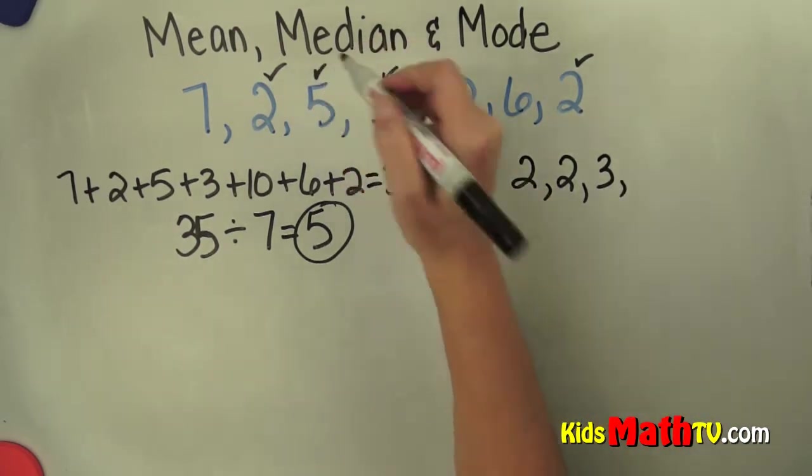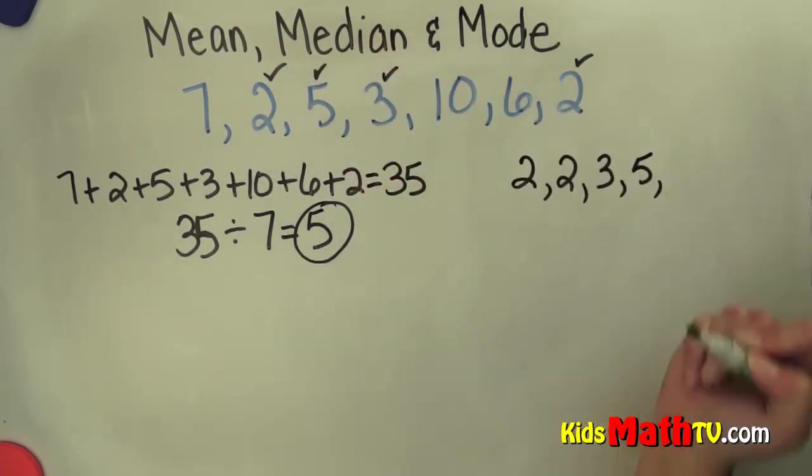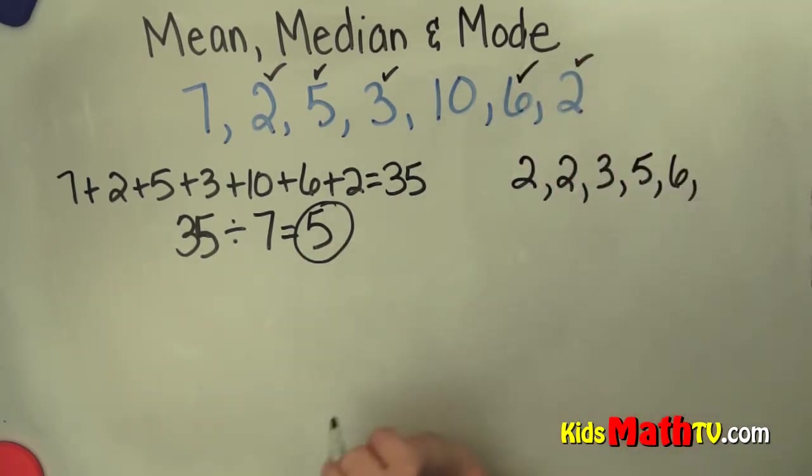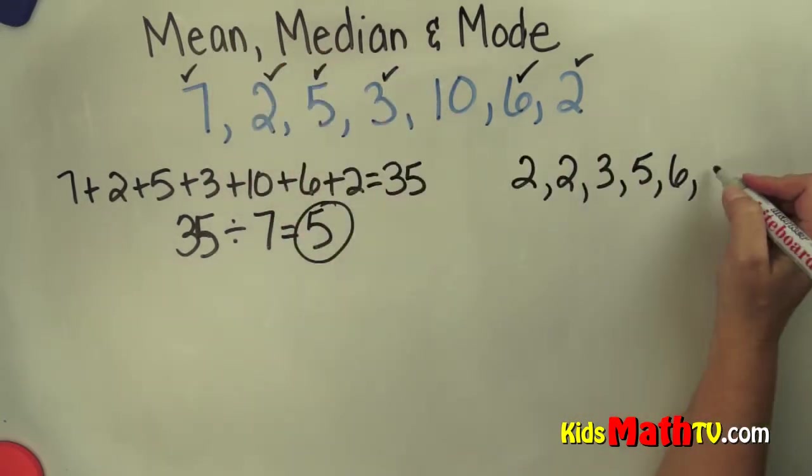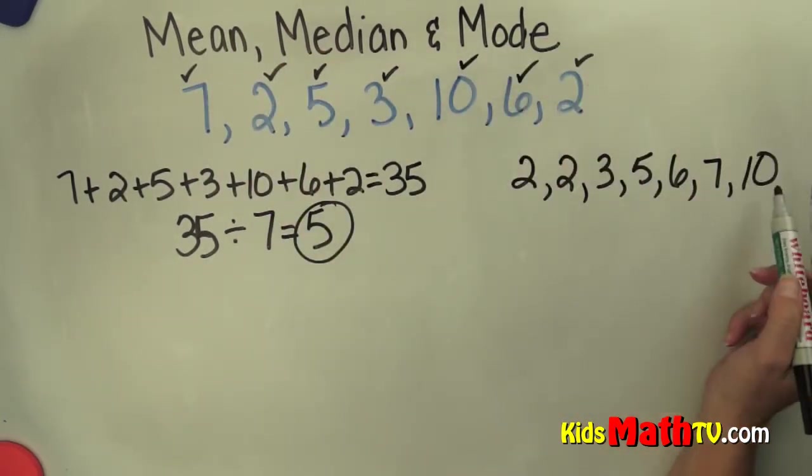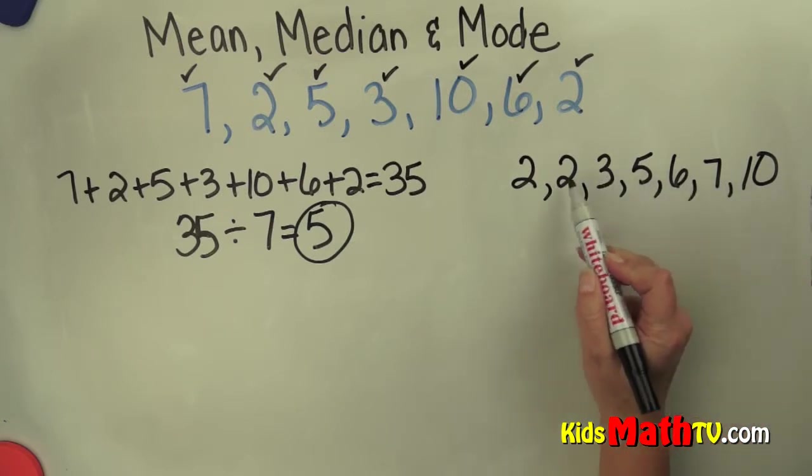The next number would be 5, then 6, then 7, and 10. I'm going to check: 1, 2, 3, 4, 5, 6, 7. I have all of the numbers there.